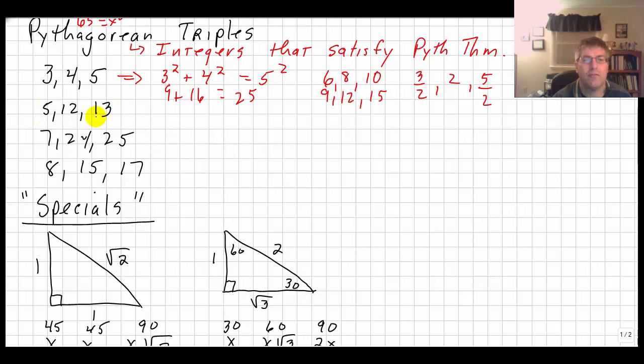Other families would be the 5, 12, 13. 5 squared plus 12 squared equals 13 squared. The 7, 24, 25. 7 squared plus 24 squared equals 25 squared. And the 8, 15, 17. And again, this multiplying concept still holds. And 8, 15, 17 is still the same thing as a 24, 45, 51. But I've increased each of these by a factor of 3. So this is still the 8, 15, 17 family if I take out my common factor.